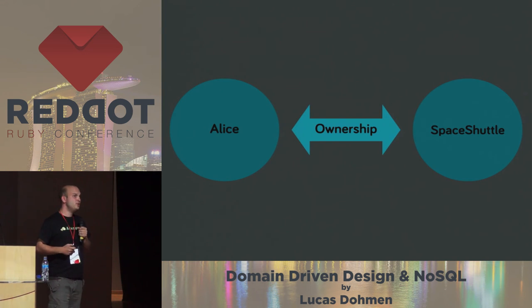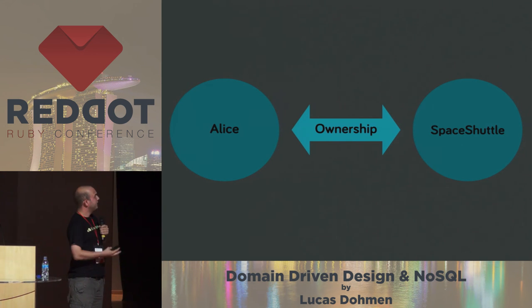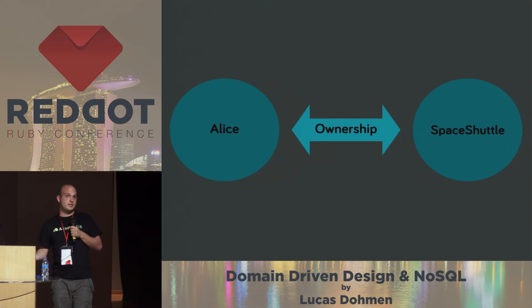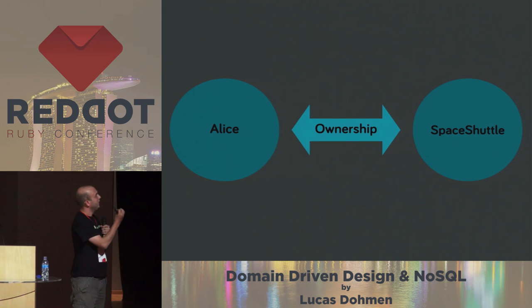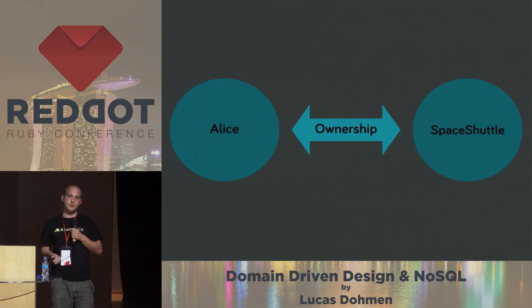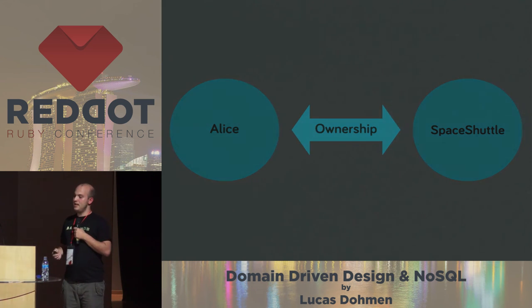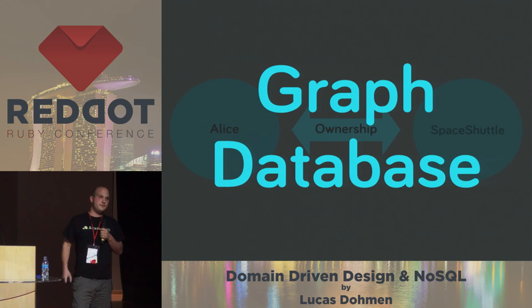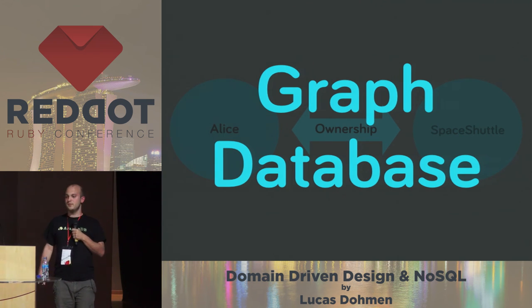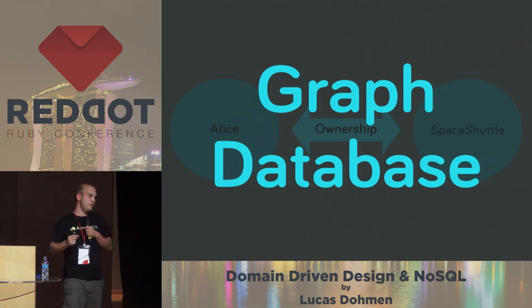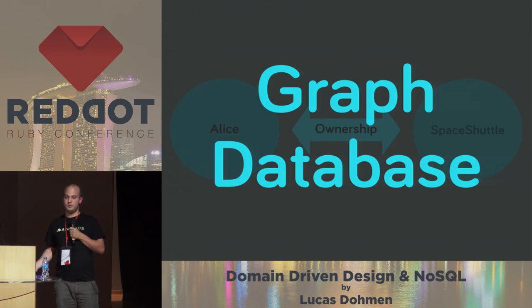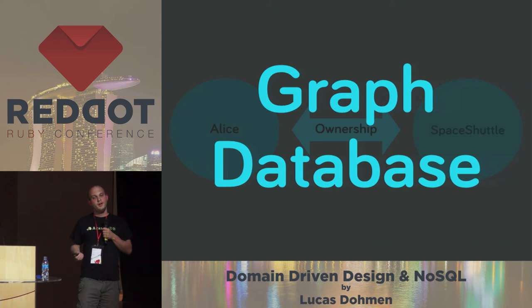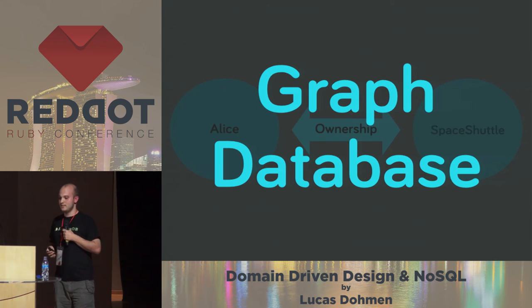So there's a different way to model relationships between things, and this is a graph. We have Alice, and as the person who drew the domain before, we would draw an arrow between those two things — there's an ownership between them, Alice owns the spaceship. And if you can do that kind of thing in your database, then it's probably a graph database. The most important thing is you have some way of storing graphs and naturally querying those graphs.